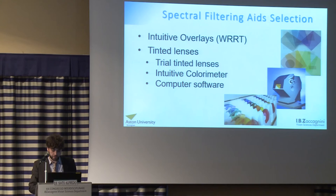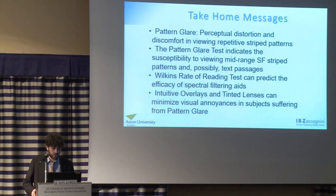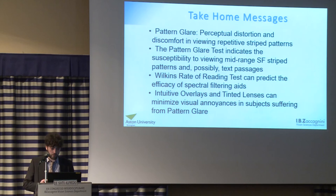The key take-home messages: Pattern glare is the presence of perceptual distortion and discomfort in viewing repetitive stripe patterns. The pattern glare test indicates susceptibility to mid-spatial frequency stripe patterns and possibly text passages. The Wilkins Rate of Reading Test can predict the efficacy of spectral filtering overlays. Intuitive overlays and tinted lenses can minimize visual annoyance in subjects suffering from pattern glare. If you are interested, please visit the poster session or contact me by email. Thank you for your attention.